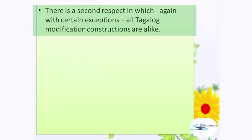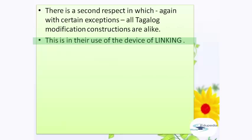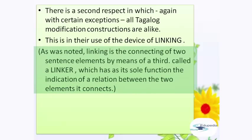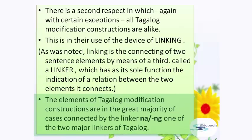There is a second respect in which, again with certain exceptions, all Tagalog modification constructions are alike. This is their use of the device of linking. Linking is the connecting of two sentence elements by means of a third called a linker, which has as its sole function the indication of a relation between the two elements it connects. The elements of Tagalog modification constructions are in the great majority of cases connected by the linker na or nang, one of the two major linkers of Tagalog.